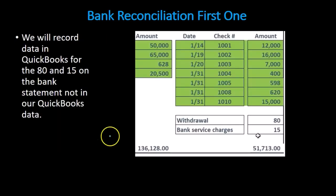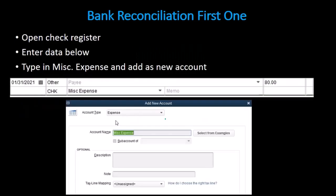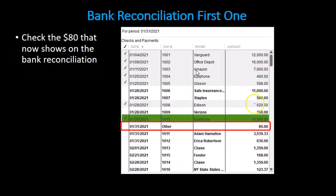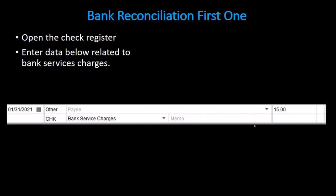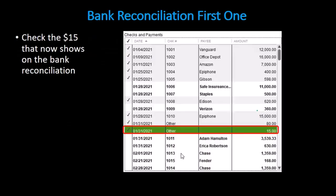Once we've done that, we're going to identify anything that's on the bank statement but not on the books. In this case we have two items on the bank statement not on the books. When working with QuickBooks, we would make the adjustment — go into the account and in the check register enter the data for anything on the bank statement that's not on our books, then check that item off. We'll do the same for any other items such as bank service charges — go to the check register, enter that data, and check it off.